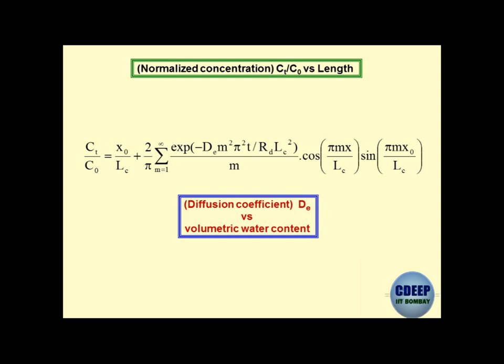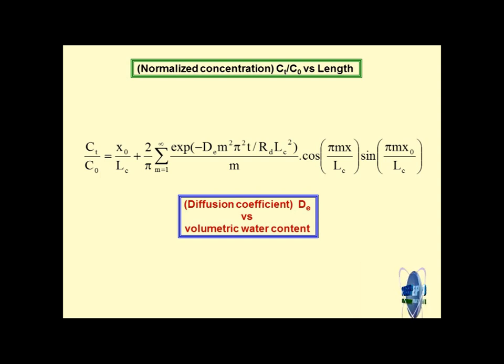If I know the DE value, I substitute the value of X, the value of T, and I know what Ct/C0 is - that is what I want to do. Suppose if I dispose some contaminant somewhere and want to find out its influence at distance X and time T in one dimension, I can solve this. One way is to conduct an experiment and get the DE value.